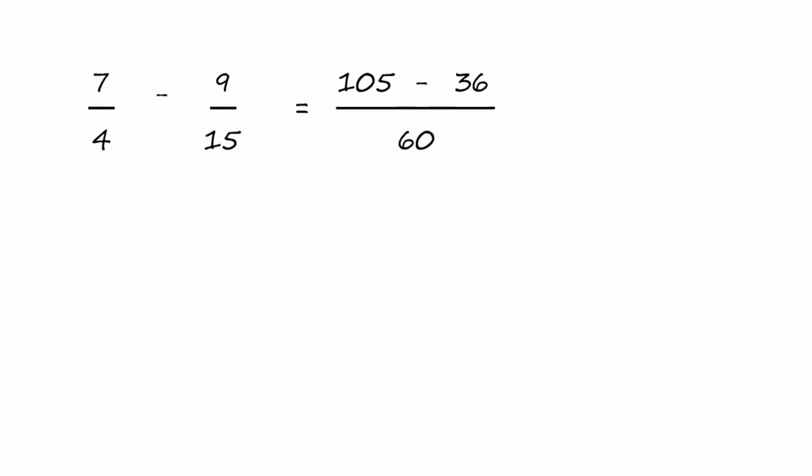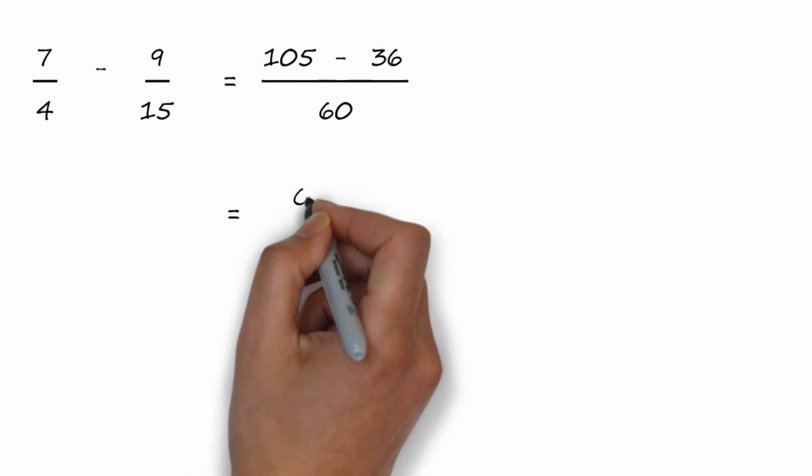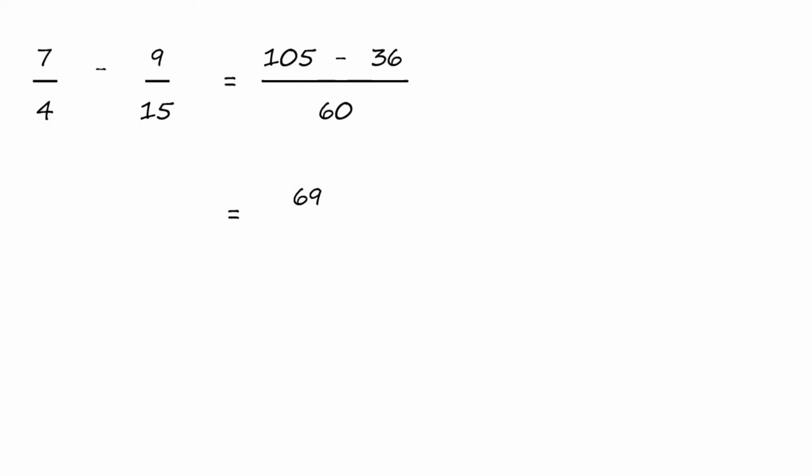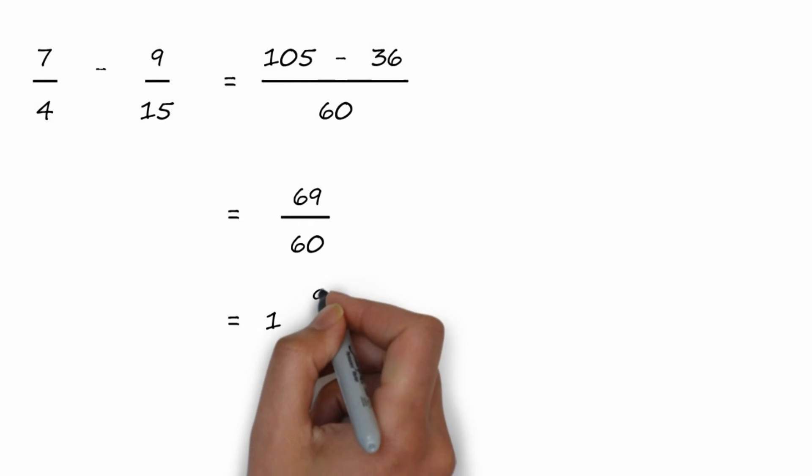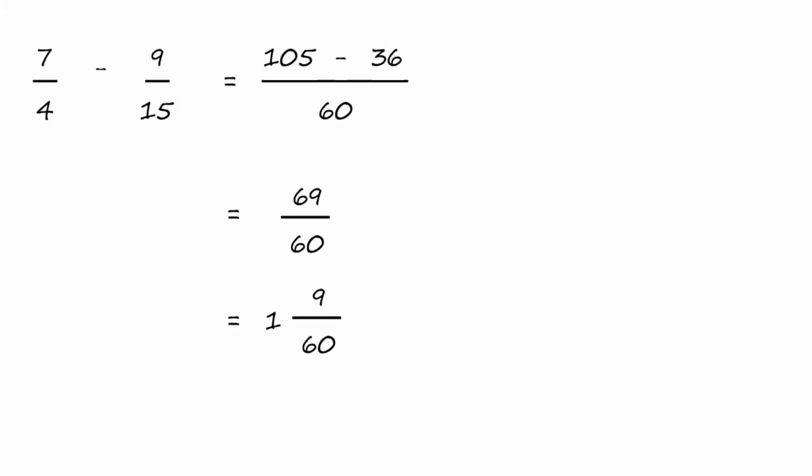And now we just do our simple subtraction on top. 105 minus 36 is 69, all over 60. We can simplify this by dividing by 60, which goes once, with a remainder of 9 over 60. And we can even take a three out to simplify that further, and we get one and three-twentieths.